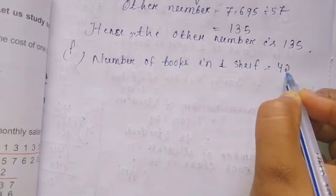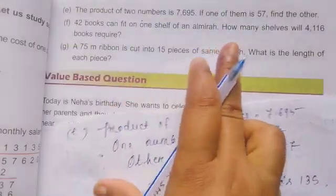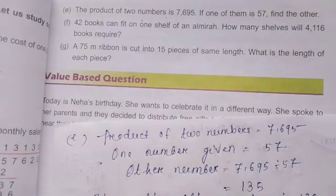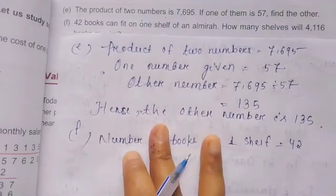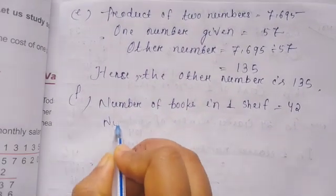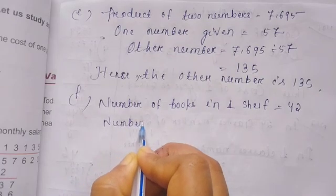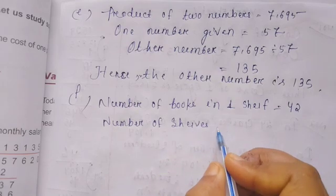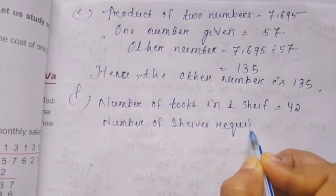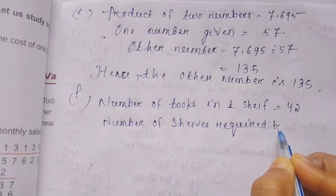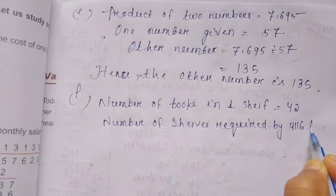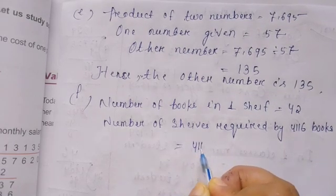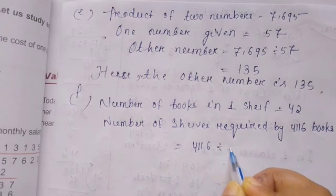Number of shelves required by 4,116 books equals 4,116 divided by 42.